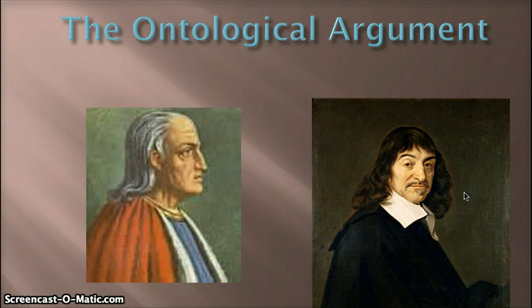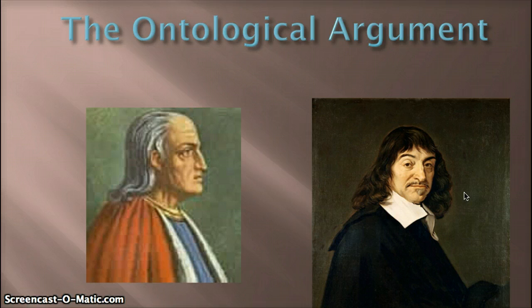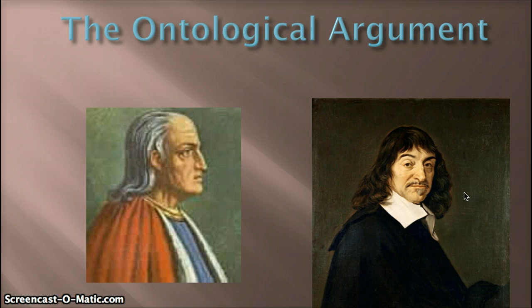Descartes, at least according to reports, was not aware that he was using the same argument as Anselm, but nonetheless it was to him a powerful argument. Now, what do we mean when we call the ontological argument ontological? Ontology has to do basically with being or essence, and so the idea behind the ontological argument is that somehow if we understand the essence, the being of God, then we have to admit that God necessarily has to exist.